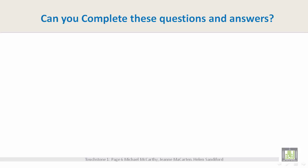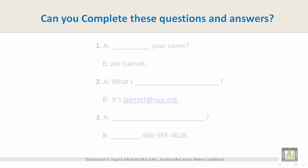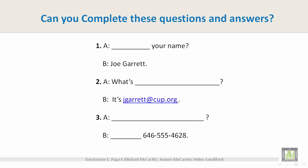Can you complete these questions and answers? Number one — A: What's your name? B: Joe Garrett. Number two: What's your email address? It's jgarrett at cup.org. Number three: What's your phone number? It's 646-555-4628.